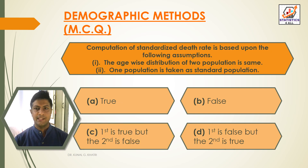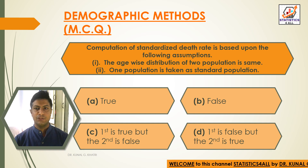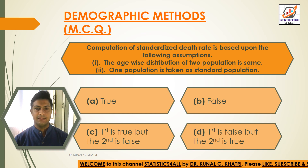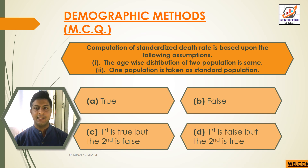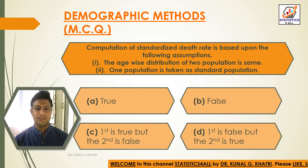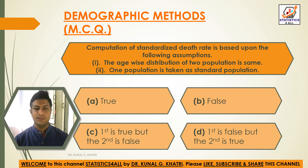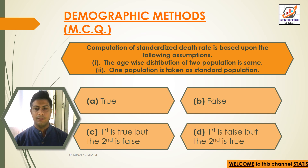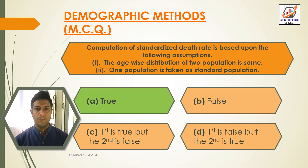Next question: computation of standardized death rate is based upon the following assumptions — first, the age-wise distribution of two populations is the same; second, one population is taken as standard population. Option A: true, Option B: false, Option C: first is true but second is false, Option D: first is false but second is true. The answer is Option A — true.